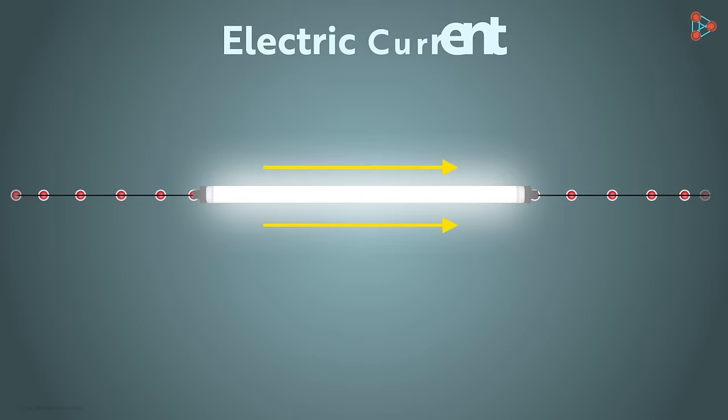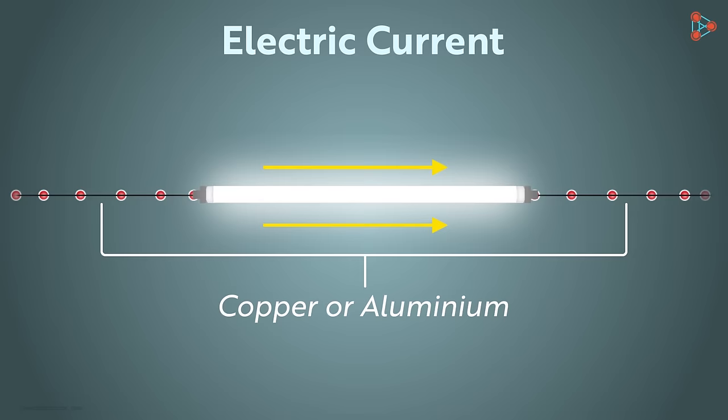These wires are made of metal, usually copper or aluminium, and you can understand why. But why are the charges in a wire moving in one direction? Or what makes the charges move in the wire?